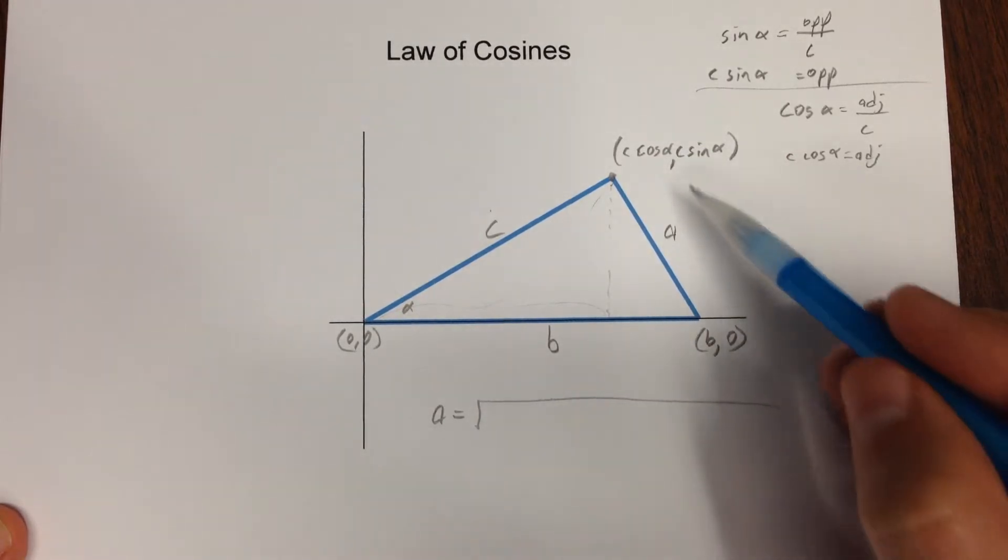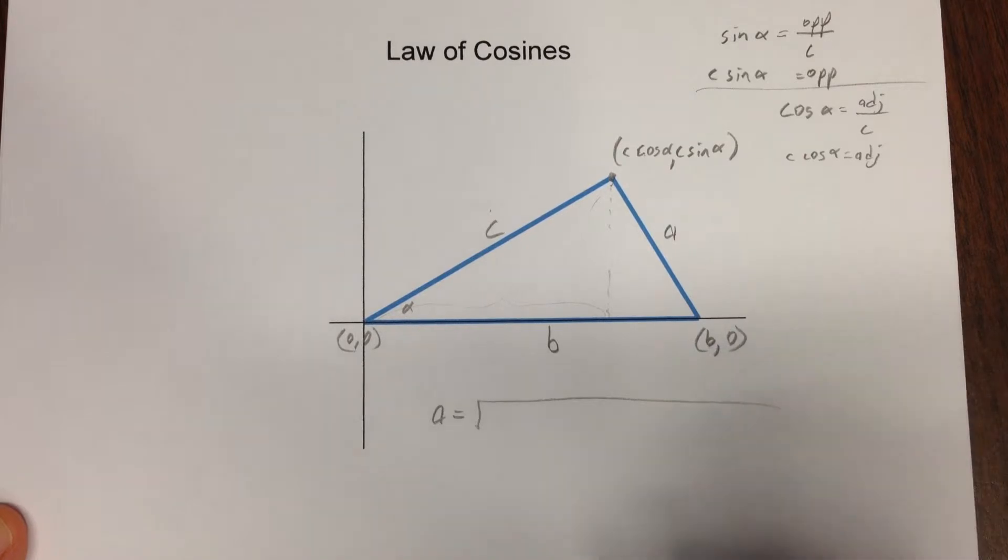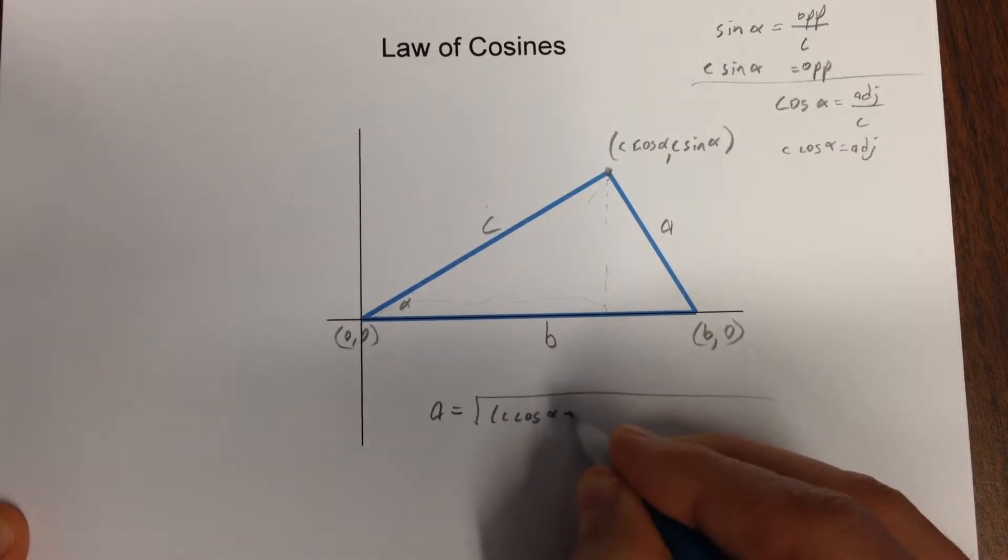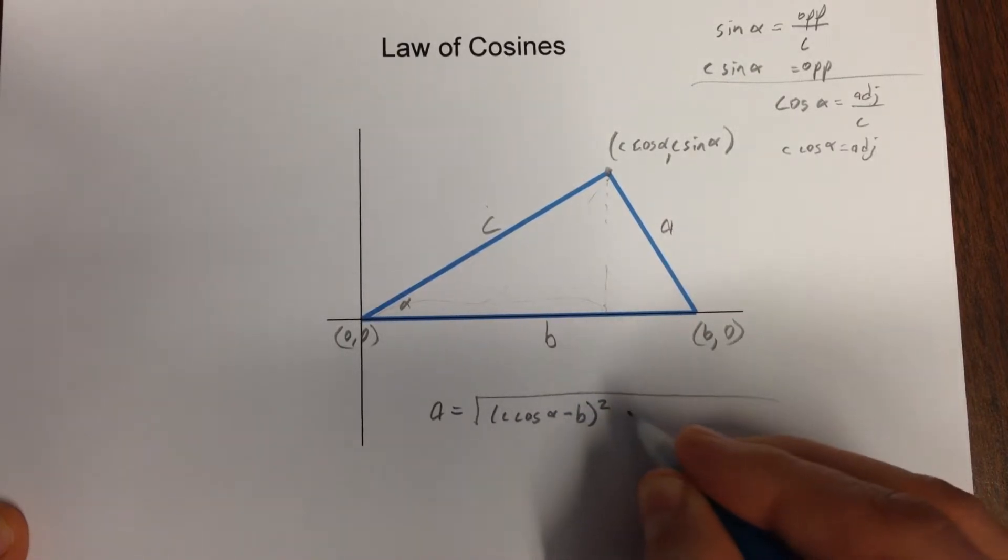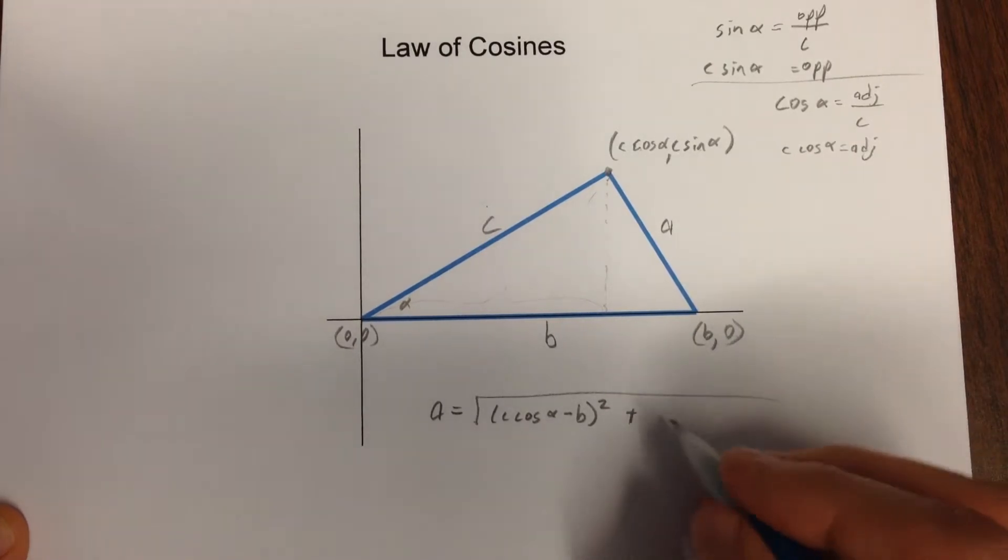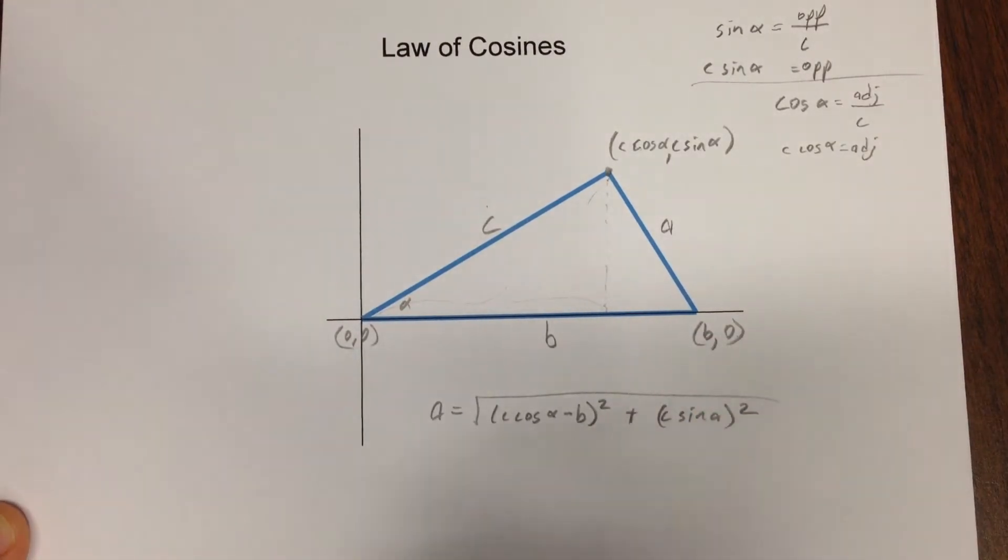The distance formula says it's the square root of the difference in the x-coordinate squared. So C cosine alpha minus B squared plus the difference in the y-coordinate squared. Since one is zero, it just looks like C sine alpha squared. Convince yourself that really is the distance formula.